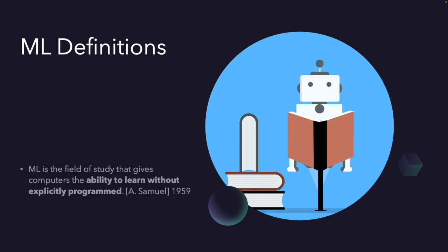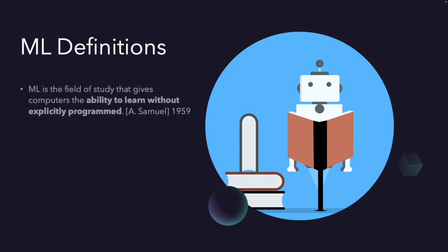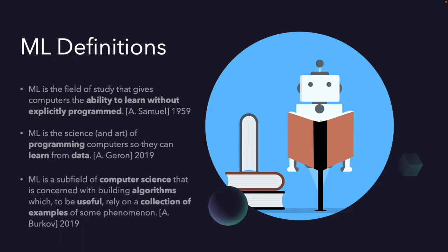The first definition from Arthur Samuel, he defined machine learning in 1959. As you see, there are some keywords such as learn and without explicitly programmed. And our second and third definitions are from the sources of this video series, the second one from Geron and the third one from Burkov. There are some differences between them.